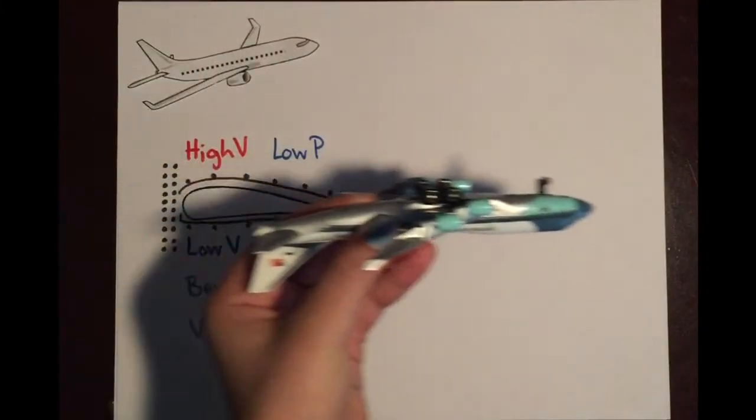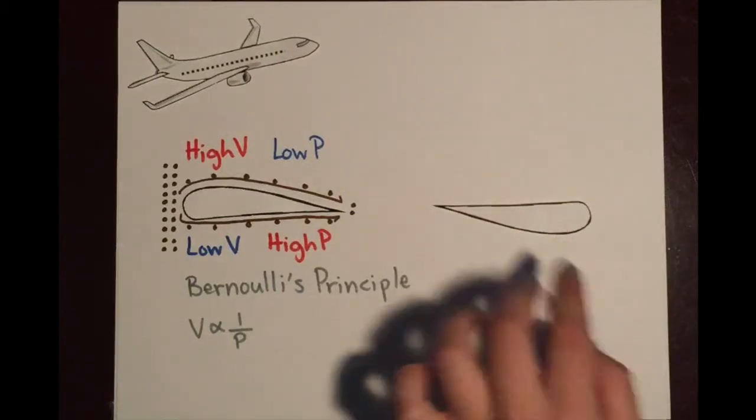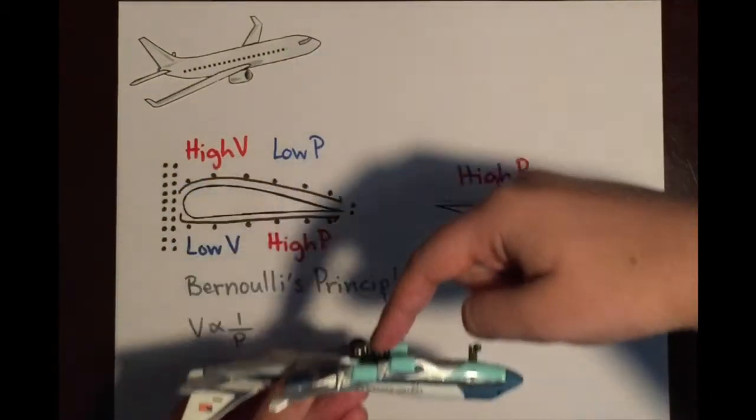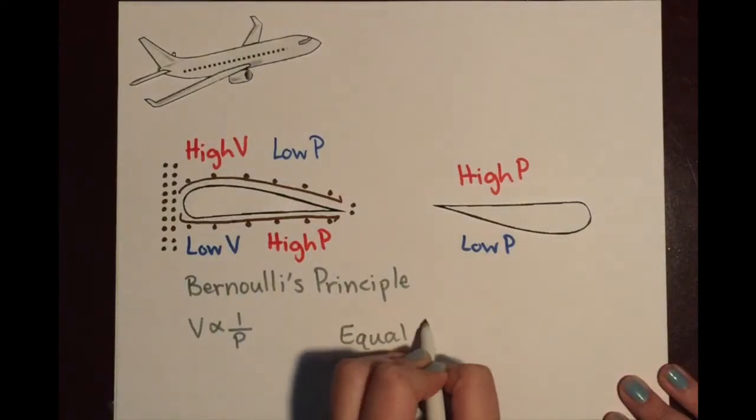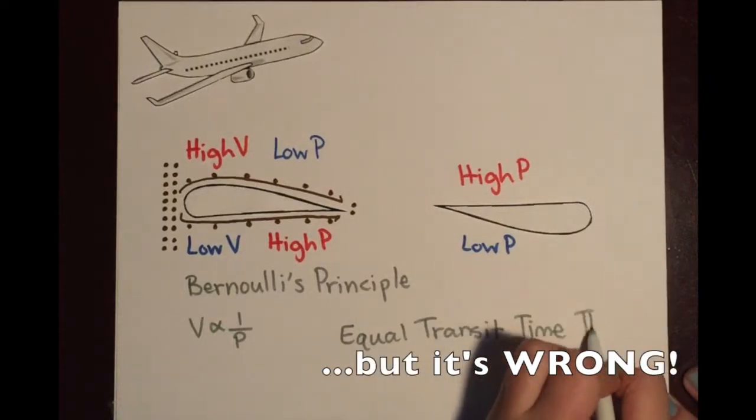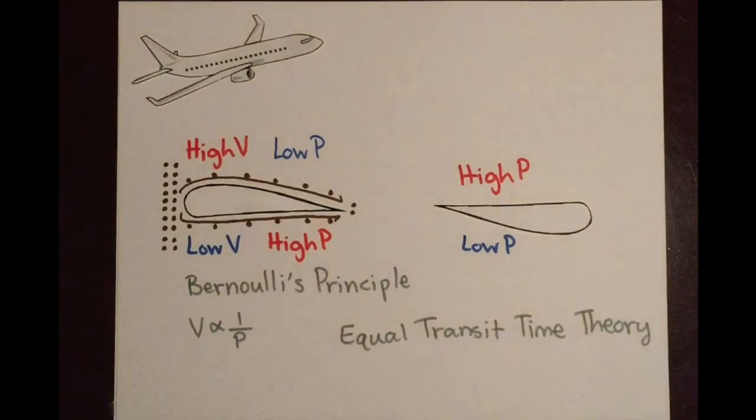But wait, then how can an airplane fly upside down? That means that there would be a low pressure on the bottom and a high pressure on the top, pushing the airplane down. This theory is called the Equal Transit Time Theory because it assumes that all of the air particles take the same amount of time to cross over the wing. This is clearly incorrect because airplanes can actually fly upside down.